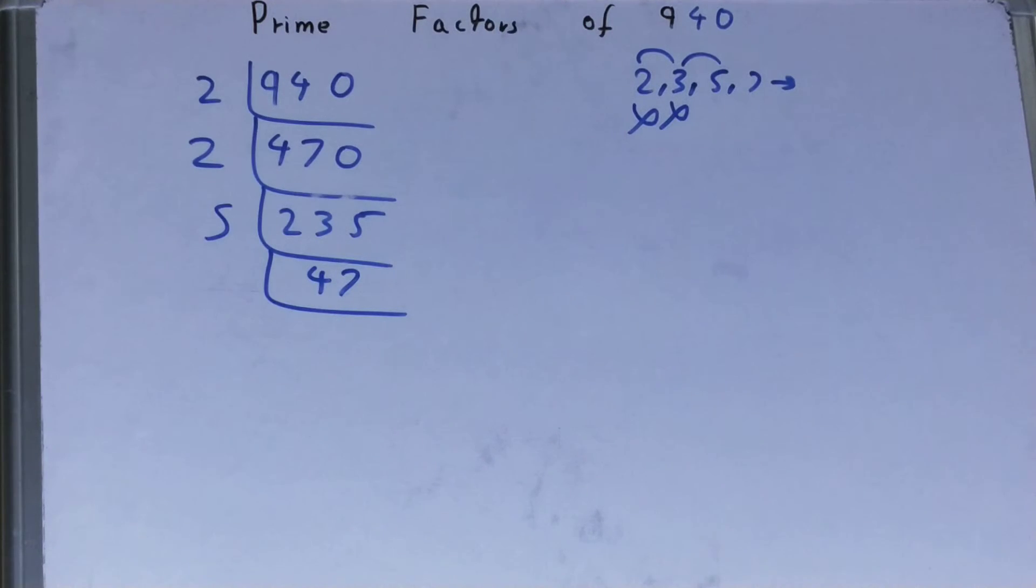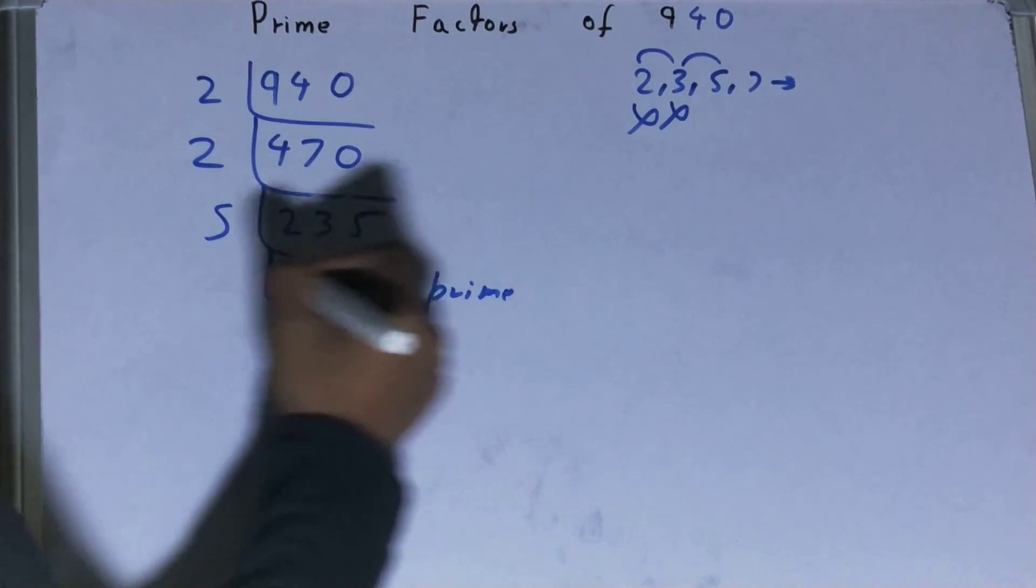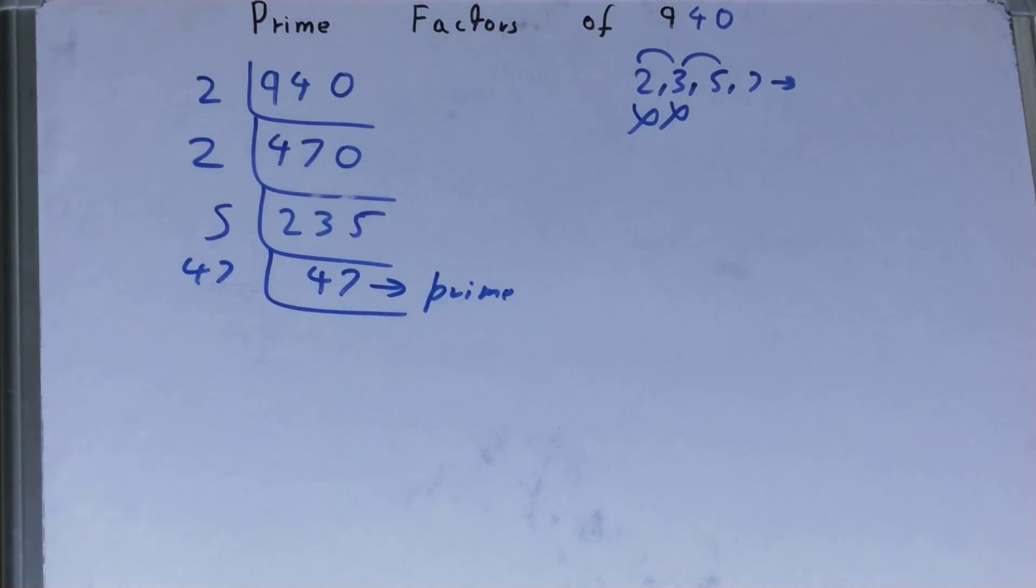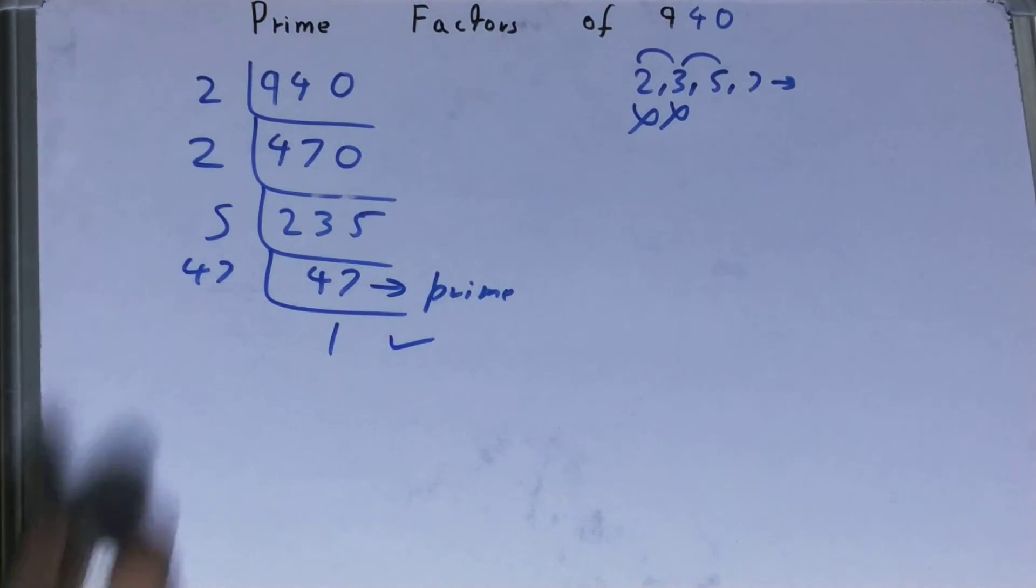Is this 47 further divisible by 5? The answer is no. And 47 is also a prime number, so it is only divisible by itself. When you do so, you will be left with 1. And once you are left with 1, the work is done.